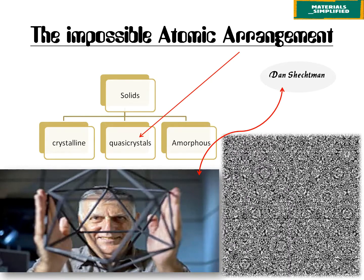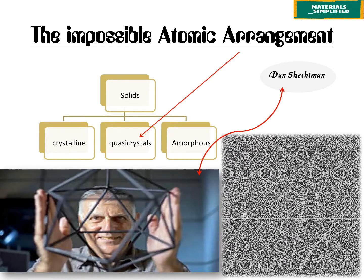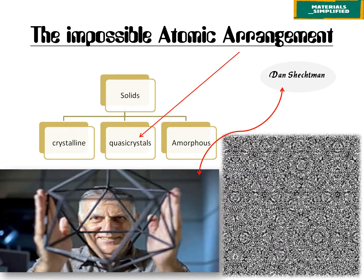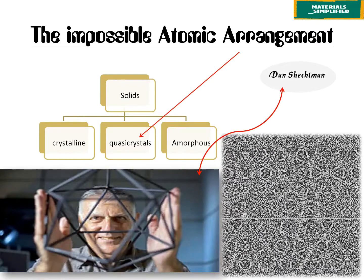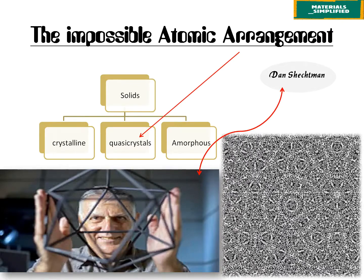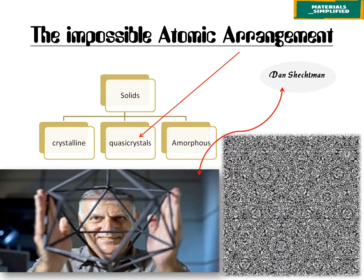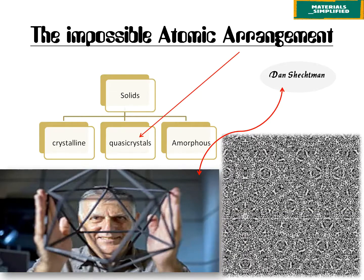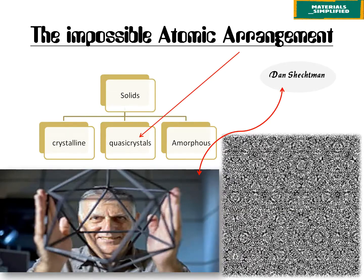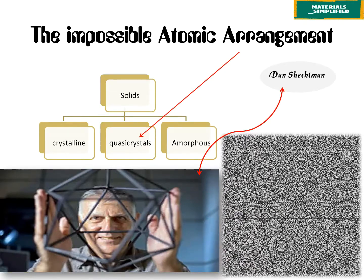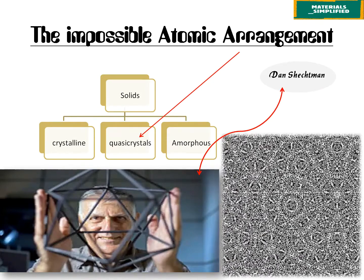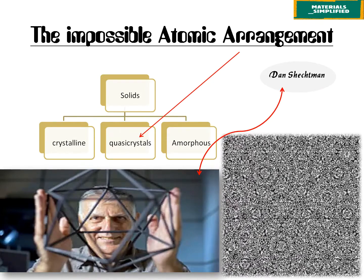After the discovery in 1982, solids are classified as crystalline, quasicrystals, and amorphous. Quasicrystals literally means 'almost crystals,' so when we talk about quasicrystals, we mean these are almost crystals.